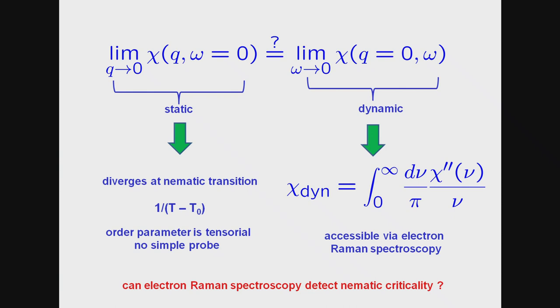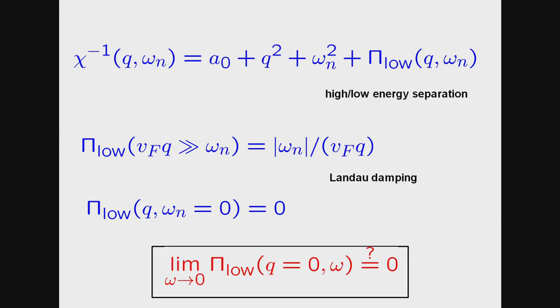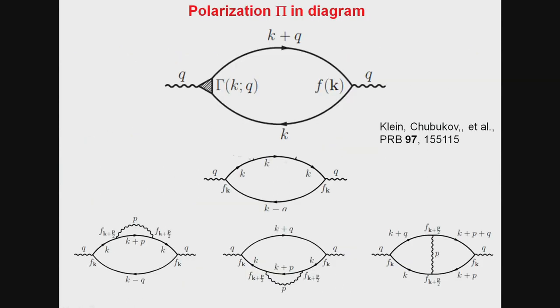So, in other words, the question really is can electron Raman spectroscopy, because this is really what is measured in Raman spectroscopy, so it's a photon in and out process, there are two photons with two polarizations, and two vectors make a rank two tensor, so it can really couple to the nematic variable. But can electron Raman spectroscopy really detect nematic criticality. So that's the question which is hinging upon this equality.